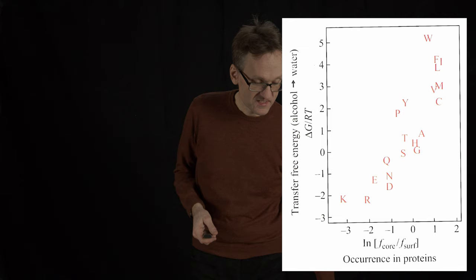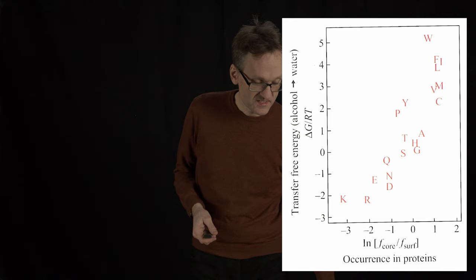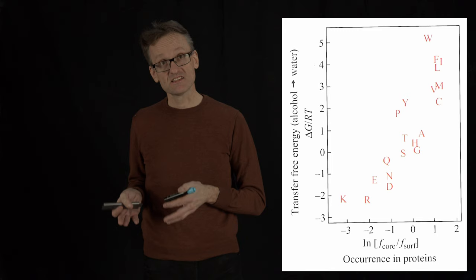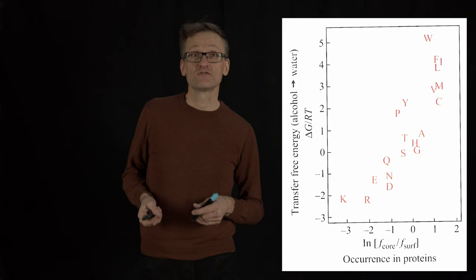This is where I basically compared the two types of distributions. On the x-axis here, I have the probability of certain amino acids occurring either on the inside of proteins or the surface of proteins. So K for instance, lysine, very much surface, while some of the hydrophobic ones, tryptophan, very much inside.